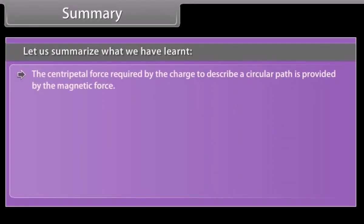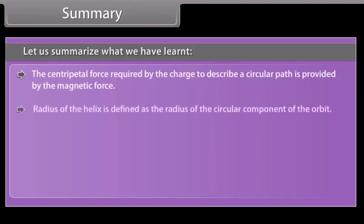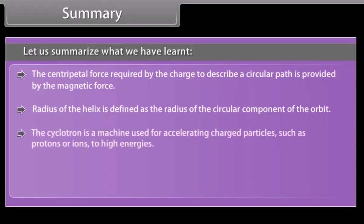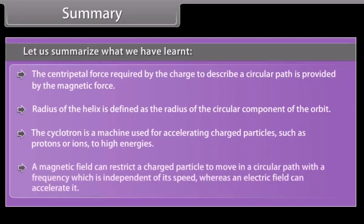The centripetal force required by the charge to describe a circular path is provided by the magnetic force. The radius of the helix is defined as the radius of the circular component of the orbit. The cyclotron is a machine used for accelerating charged particles such as protons or ions to high energies. A magnetic field can restrict a charged particle to move in a circular path with a frequency independent of its speed, whereas an electric field can accelerate it.